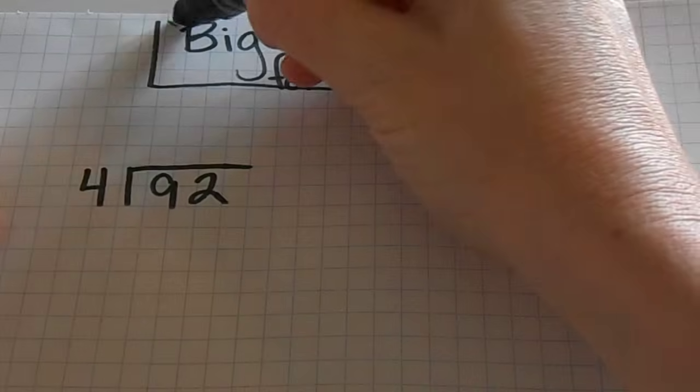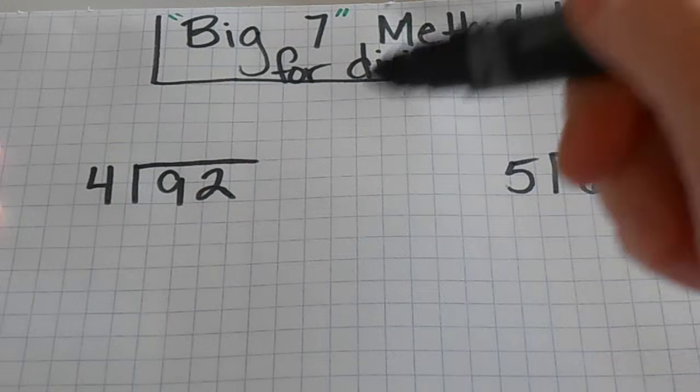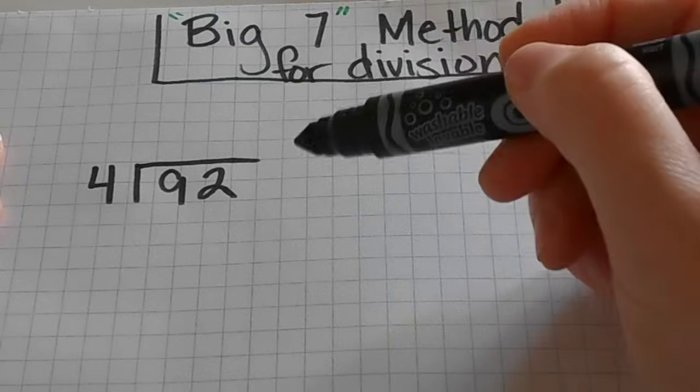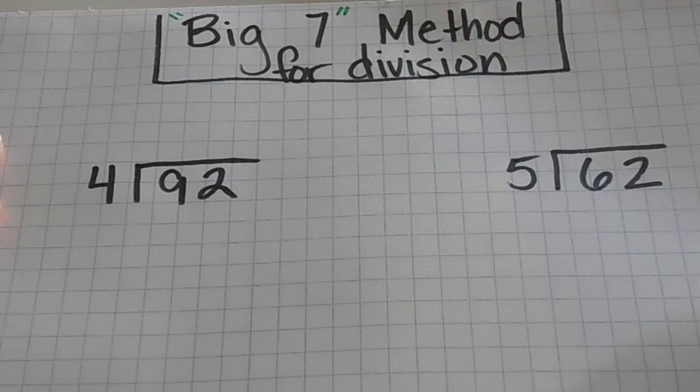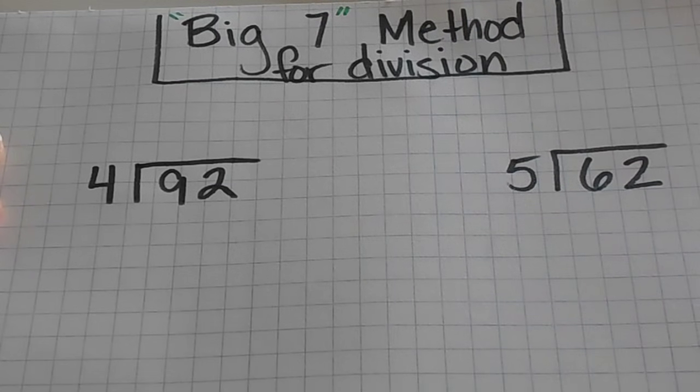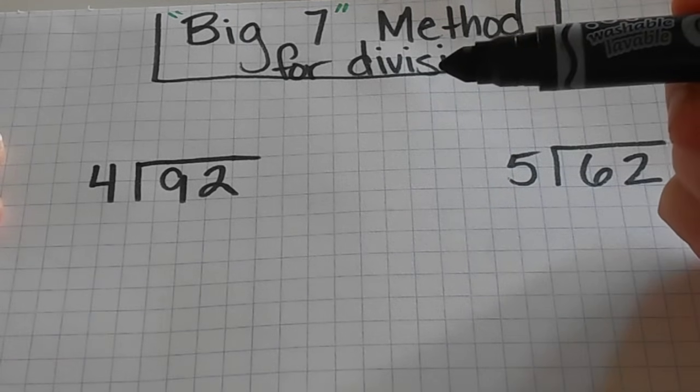And it's called the big seven because, well I'm going to show you that in just a moment, that when we do our bracket it's going to look like a big seven. So I have a couple of problems. We're going to start with this one, 92 divided by four.